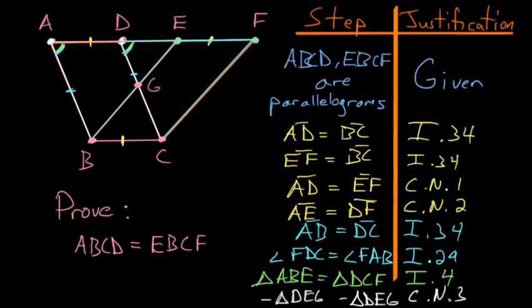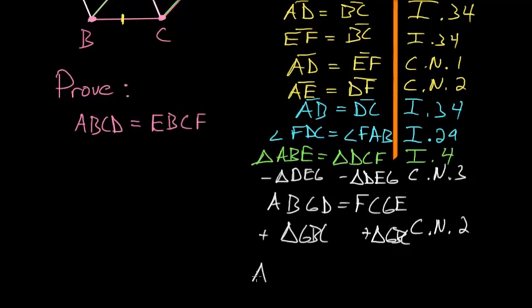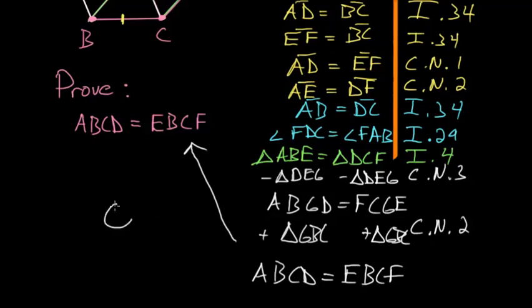So, by adding this triangle GBC to each side, we're saying that the parallelogram ABCD would be equal to the parallelogram EBCF. And that was exactly what we're trying to prove so we can end with QED.